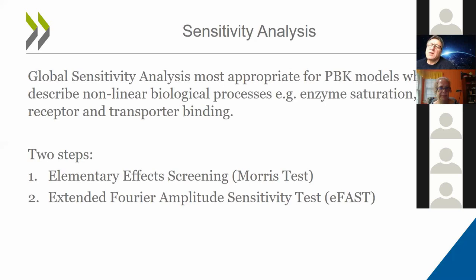For example, if you're interested in the concentrations of a substance in the blood, which parameters determine the variability in that concentration? We have a test called the Morris test, which allows us to screen and select fewer parameters, which are then put through a much more computationally intensive analysis called the extended Fourier Amplitude Sensitivity Test (eFAST).